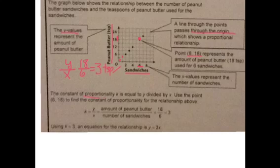So we know the constant of proportionality is k, so k equals three, so using k we know the equation is y equals kx, so in this case y equals three times x.